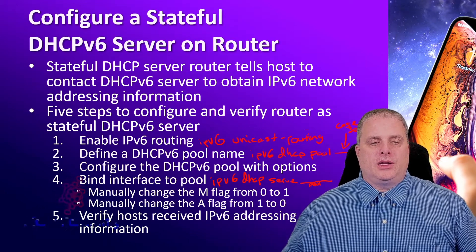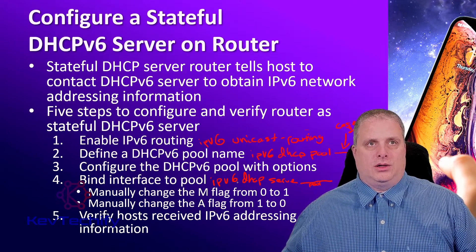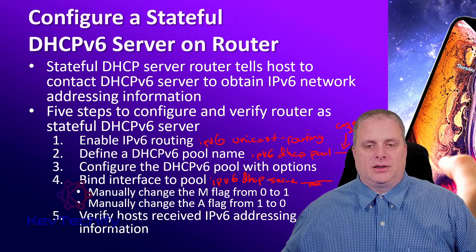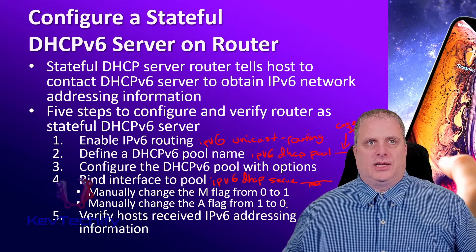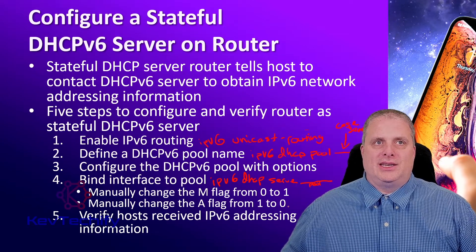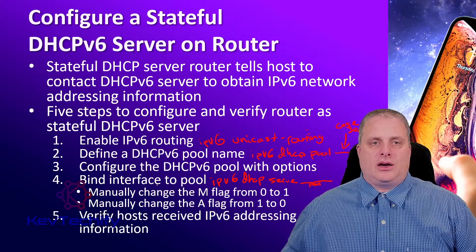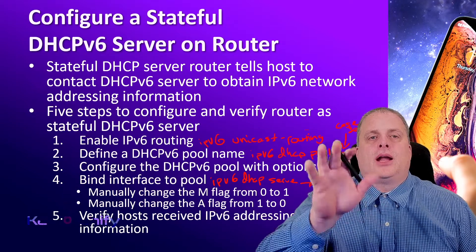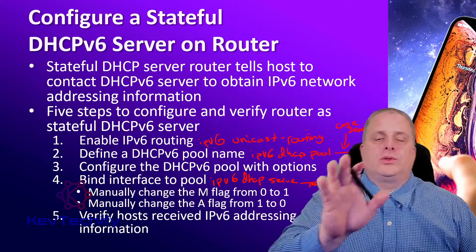Then you have to manually set your M flag to 1 — that's an IPv6 ND command. And you also have to make sure the A flag, the automatic auto-configuration flag, is set to zero — that's another IPv6 ND command. Once we have that all configured on our router, we can go to a host and verify we're pulling an IPv6 address and getting the correct ones with the correct information.